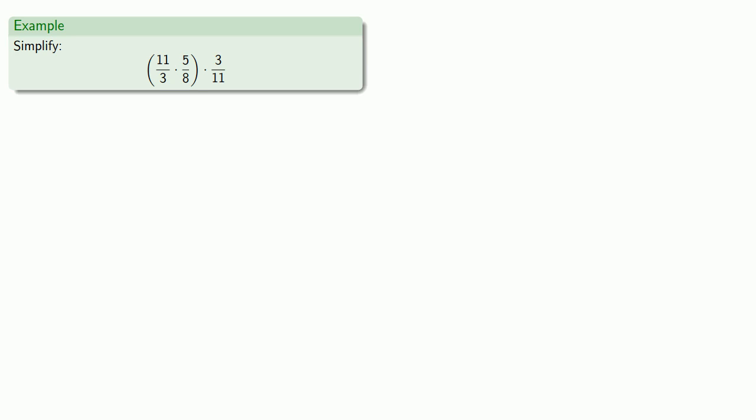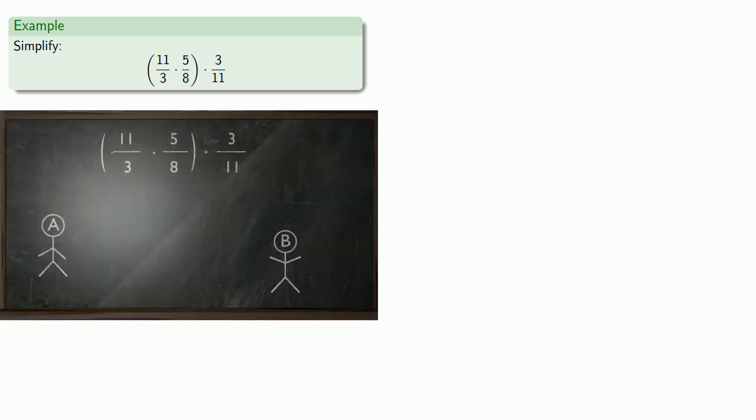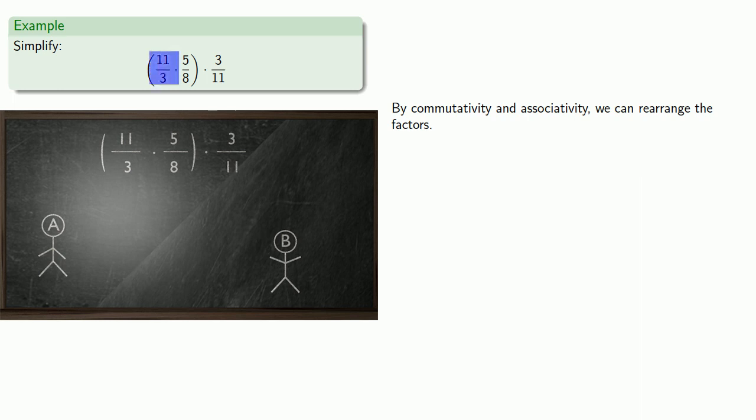Rearrangement is particularly important when we're dealing with fractions. So let's simplify eleven-thirds times five-eighths times three-elevenths. And by commutativity and associativity, we can rearrange those factors. The thing you might notice here is that we have eleven-thirds and we have three-elevenths, and if they were right next to each other, their product would be much easier to calculate. So let's do that.